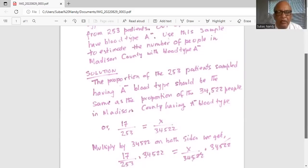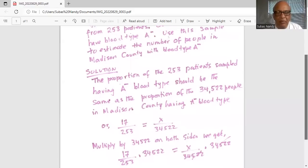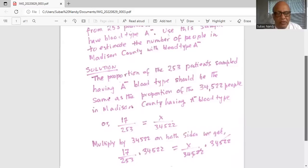So 17 in 253 patients, 17 out of a sample of 253 patients have A-. So 17 divided by 253 is equal to X divided by 34,522, where X is the number of people in the county who have A- blood type.